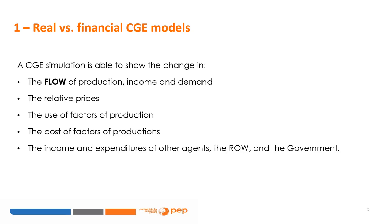When calibrated to a SAM, a real CGE model is able to replicate the flow of income, production, and demand for a given year. In a shock scenario, the results of a simulation provide not only the change in the flow composition of the GDP, but changes in other variables as well — the relative prices of goods and services, the use of factors of production affecting employment, the remuneration of factors of production such as the rate of return to capital and wage rates, and the income and expenditures of the government and the rest of the world in an open economy context.